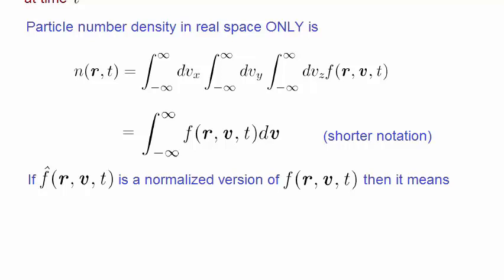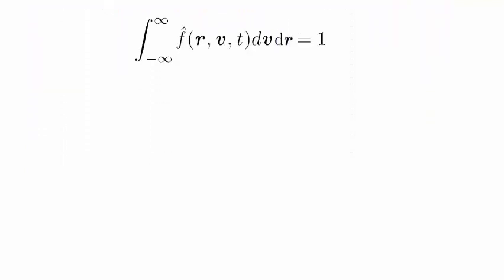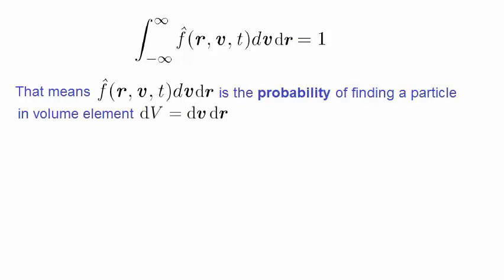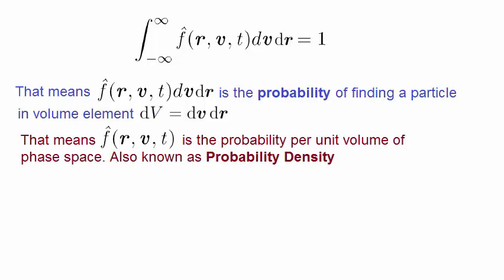This is called a normalized version of the distribution function. That means, if we carry out the following integral, it comes out to unity. So now the interpretation of this normalized distribution function changes a little bit. It means that if we take the normalized distribution function and multiply by the six-dimensional volume element in phase space, then this means that it's the probability of finding a particle in that volume element at time t. If we take away the volume element, so we just have the normalized distribution function, then it means that it's the probability per unit volume of phase space of finding a particle at position r with velocity v at time t. The normalized function can also be labeled as a probability density function.